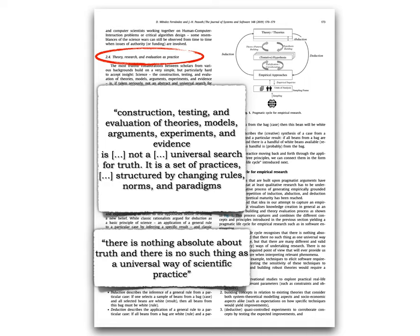There is no such thing as a universal way of scientific practice. To a certain extent, as you will see, theory building and evaluation is also a pragmatic back and forth with a multitude of research method options. This is what we introduce as a pragmatic cycle for empirical research in software engineering, forming one key contribution of our manuscript.